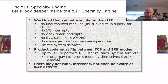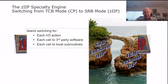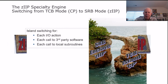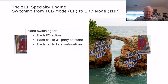Users may not tune, intervene, or even be aware of what the ZIP is doing. Think of the ZIP as basically an island — an island that's available to the TCV island, which is where central processing takes place. Island switching is required any time an IO action is required, a call to third-party software, or to a local subroutine.